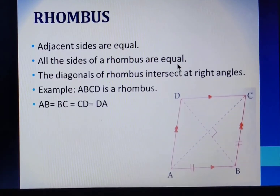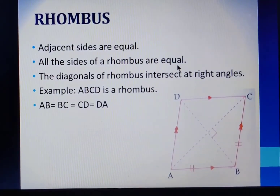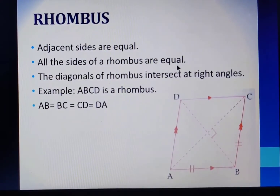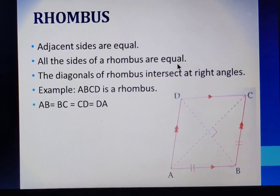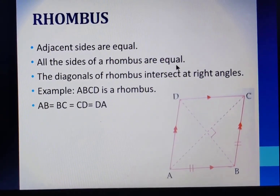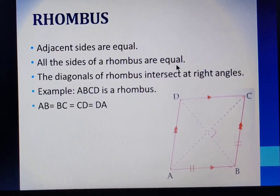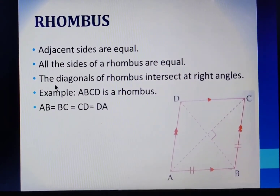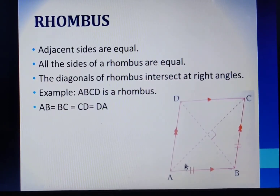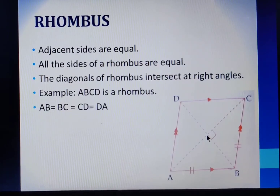There is only one difference between a rhombus and a square. In a square, all sides are equal and all angles are right angles equal to 90 degrees. But in a rhombus, the angles may not be 90 degrees. Another property of rhombus says the diagonals of a rhombus intersect at right angles. AC and BD are diagonals of the rhombus, so at the point of intersection they will intersect at 90 degrees.